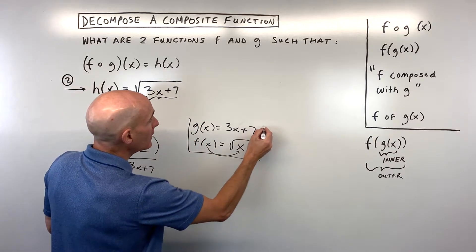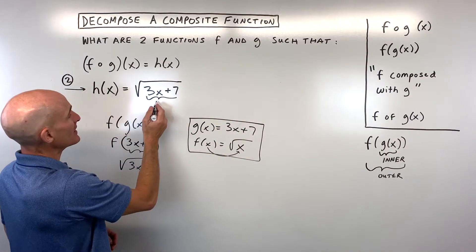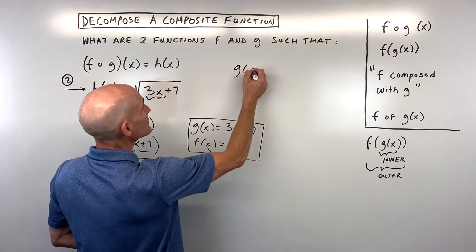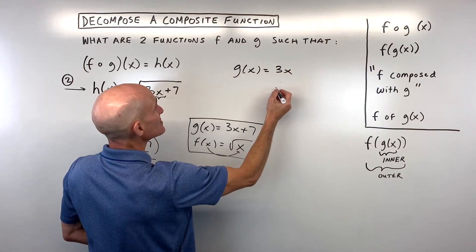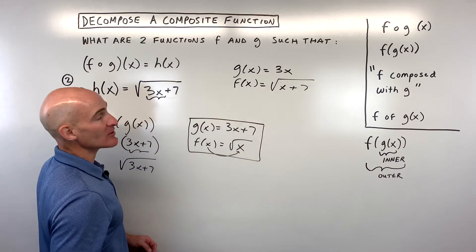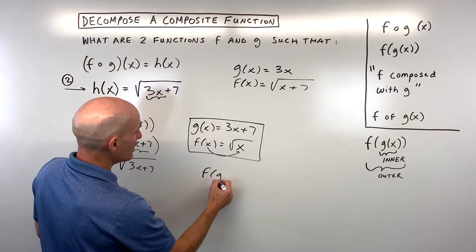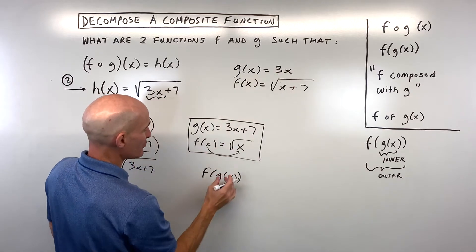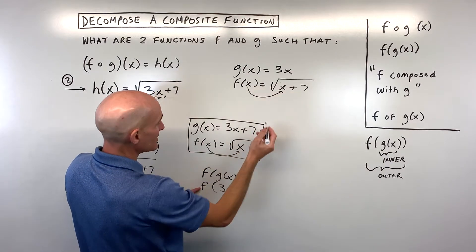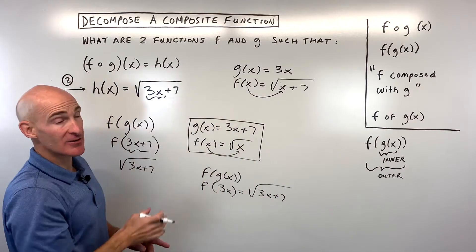You might get something different, and that's fine — there's definitely more than one way. Another approach: the inner function could be just 3x, so g of x equals 3x, and then f of x equals the square root of x plus 7. When you compose these, 3x goes in place of x on the right, giving you the square root of 3x plus 7 — the same as our h of x function.